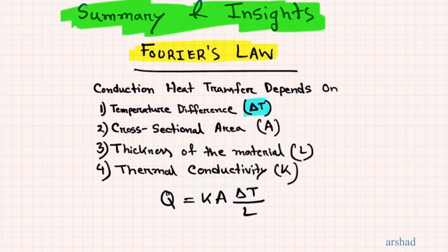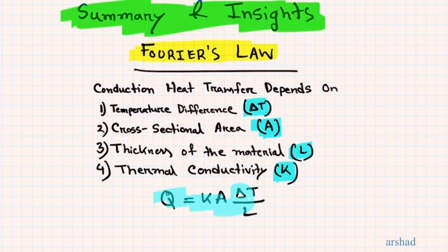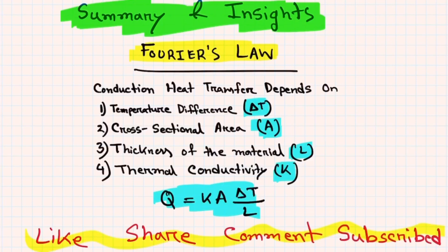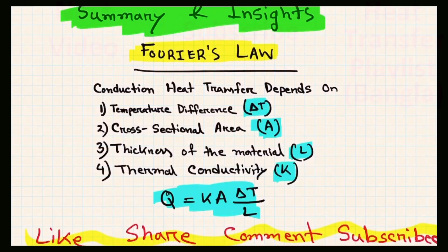In summary, the conduction heat transfer quantified by Fourier's law depends on: temperature difference, cross-sectional area, thickness of the material (thicker → less heat transfer), and thermal conductivity K. The expression is Q = K·A·ΔT / L. There are more rigorous calculus-based expressions, but this form allows easy calculation of heat transferred. Please like, share, comment, and subscribe if you found this helpful.